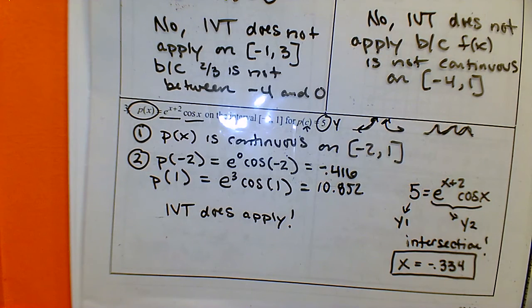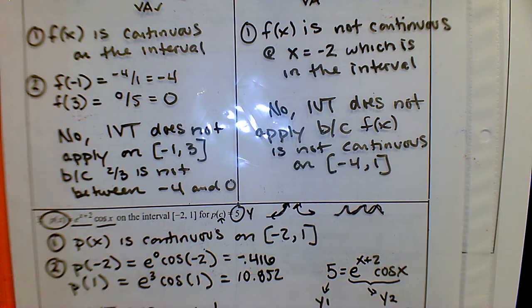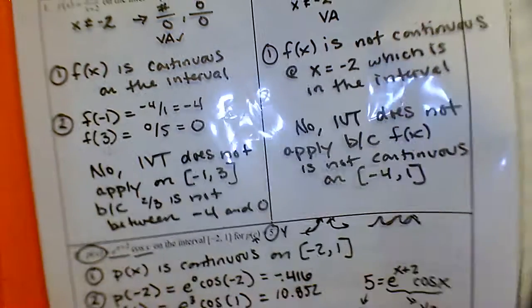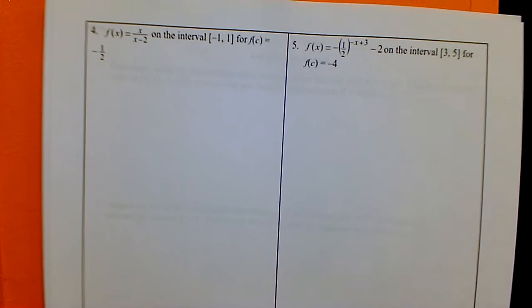We have two more similar examples tomorrow to check out. The key takeaways: know what the Intermediate Value Theorem is telling us, what it represents, and be familiar with the two conditions — continuity on the interval, and the desired y value being between the outputs from the endpoints.